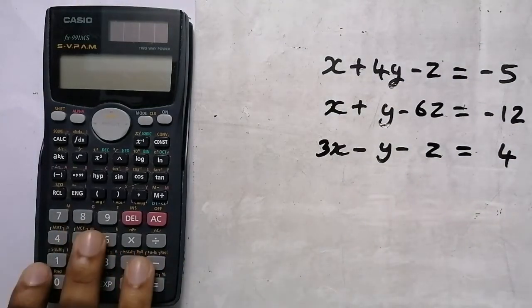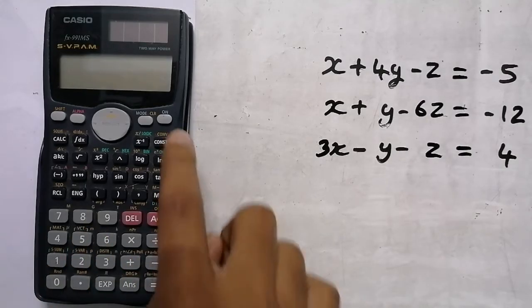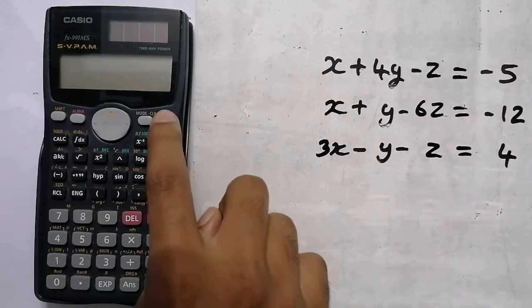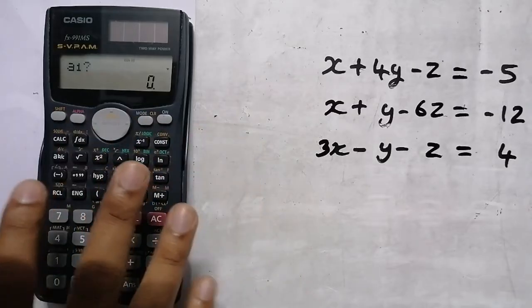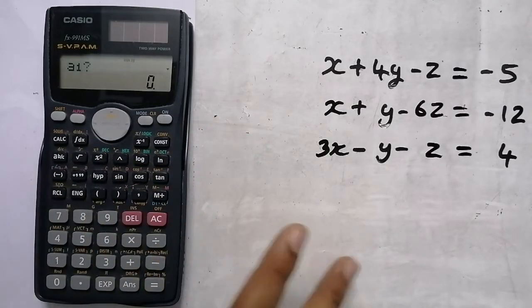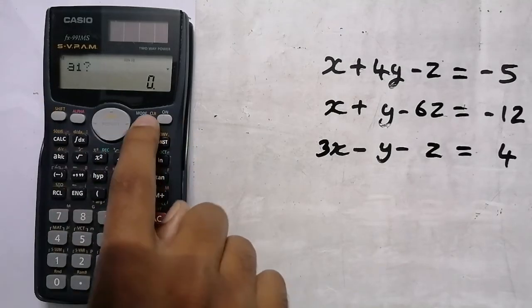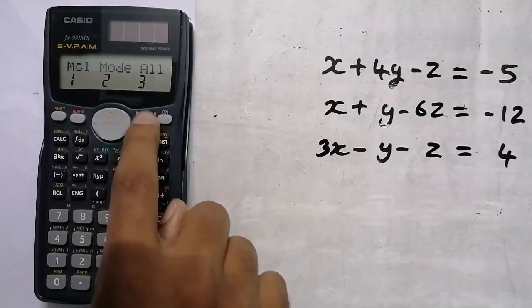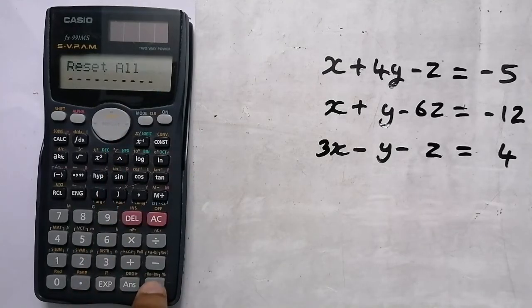Now we will use the calculator. We will reset the calculator first. Press the Shift button, then the Mode button, then 2, 2, 3.